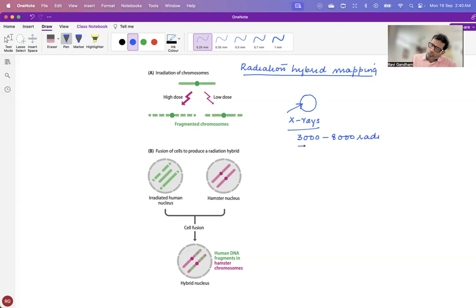And this will cause the chromosomes to break into pieces. And these broken pieces are now used to fuse along with your mouse cell line.